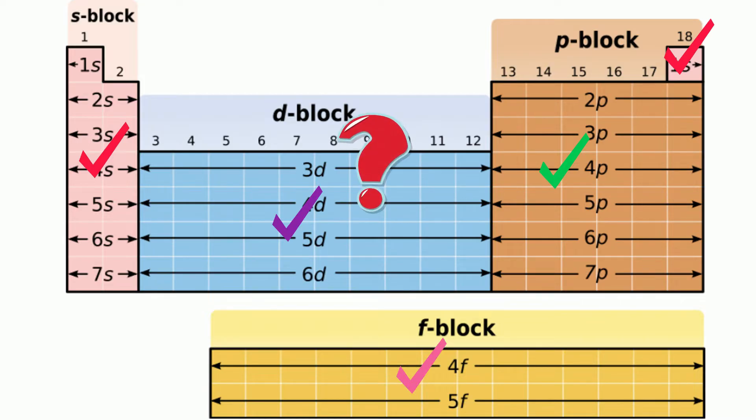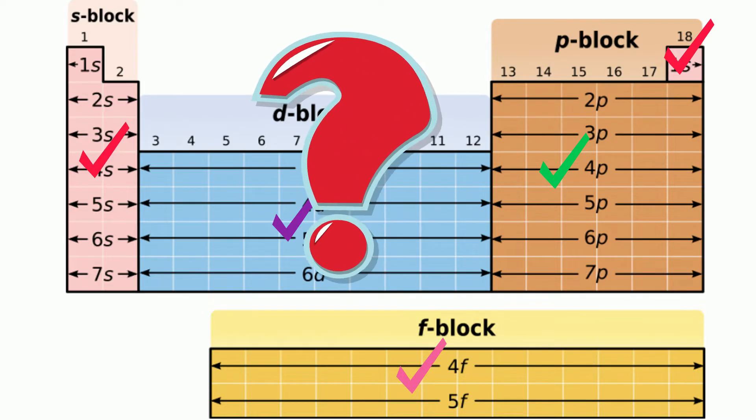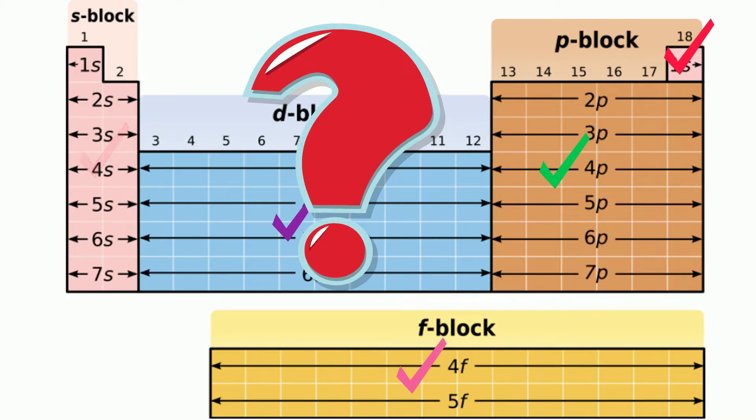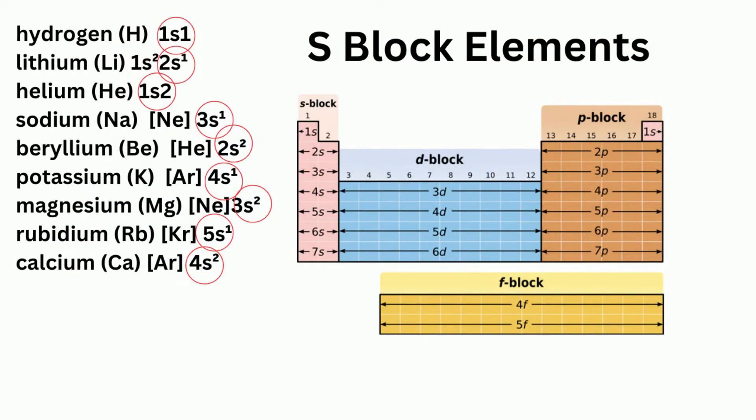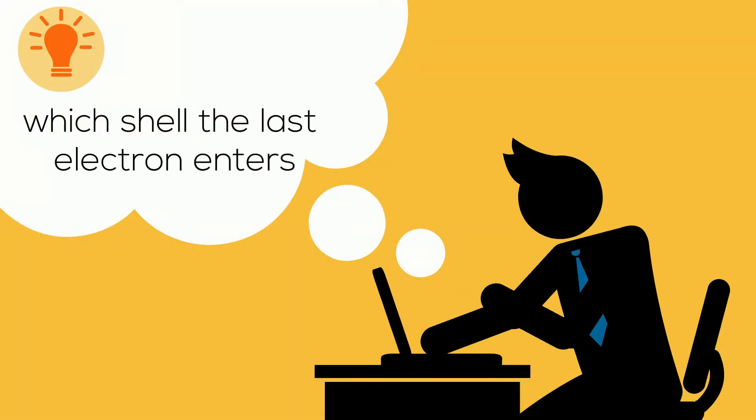So why are the elements placed in certain blocks like the S block? If you take a look at the electron configuration of elements from the S block, you will notice the last electrons are in the S orbital. So the blocks are determined by which shell the last electron enters.